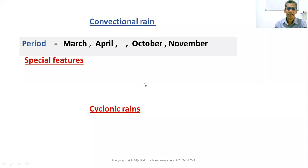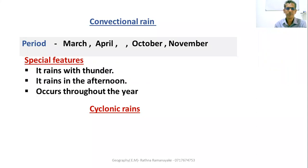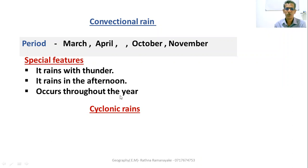Now let's pay attention to the special features of convectional rain. It rains with thunder. It rains in the afternoon. The convectional process occurs throughout the year.